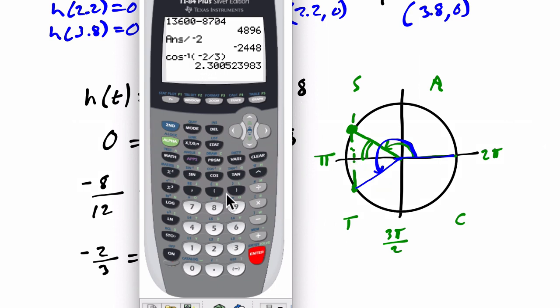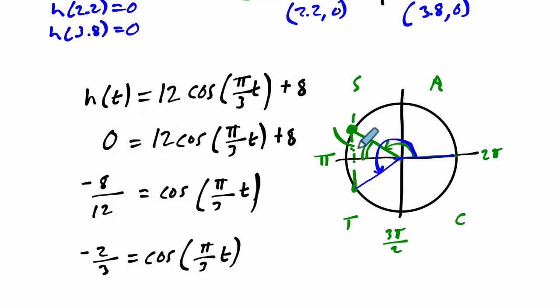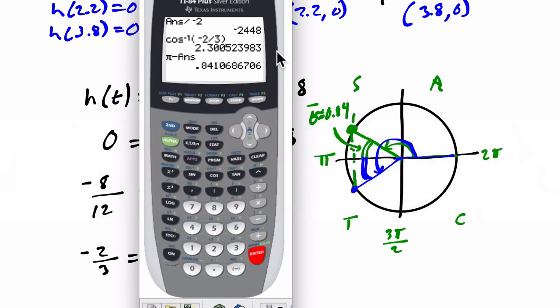So I'm going to do pi minus the answer we had before, the second answer. I could have done the reverse, but typically we choose to represent reference angles as positive. That gives me the reference angle, about 0.841 radians. So this reference angle is about 0.841 radians. That helps me because on this side, if I use that reference angle going the other direction, I get another angle with the same x value. That reference angle is the same on both sides. So I take pi and I add 0.84, to get my next angle. I do 2nd pi plus the answer we just had, the reference angle, and I get 3.98.